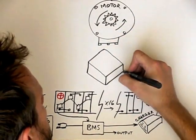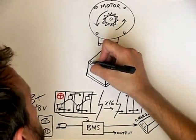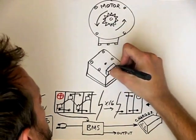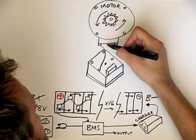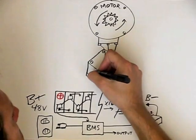The controller serves a similar function to what a carburetor does for a gas engine which is to regulate the amount of energy going to the motor. There are 3 large phase leads going between the motor and controller.